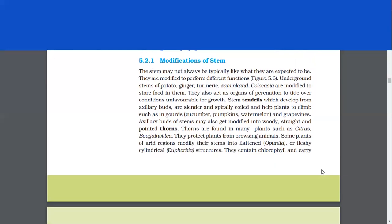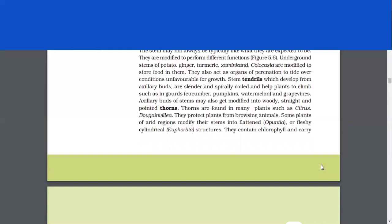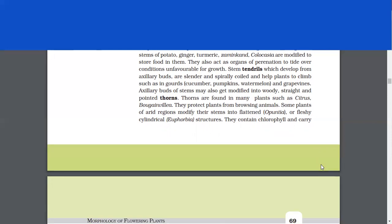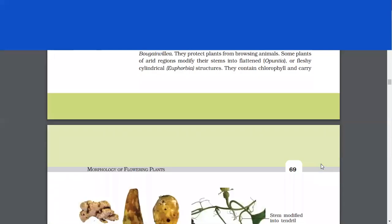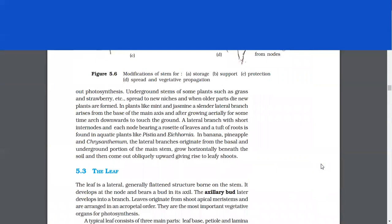Axillary buds of stems may also get modified into woody, straight, and pointed thorns. Thorns are found in many plants such as citrus, bougainvillea. They protect plants from browsing animals. Some plants of arid regions modify their stems into flattened or fleshy cylindrical structures. They contain chlorophyll and carry out photosynthesis. Underground stems of some plants such as grass and strawberry spread to new niches and when older plants die, new plants are formed.